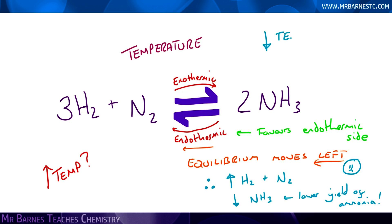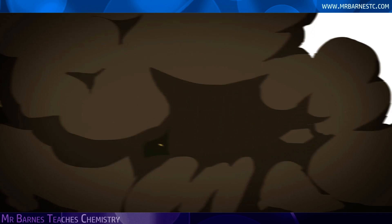If I lower the temperature, it will favour the exothermic side. Therefore, it will be the opposite of what we've just said — equilibrium will move to the right and I'll get more NH3.